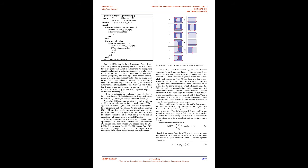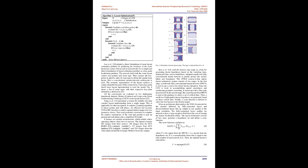Lee et al. adopted a direct formulation of room layout estimation by predicting the locations of room layout keypoints with an end-to-end network. It is a simple and direct formulation of layout estimation as a keypoint localization problem. The network infers both the room layout corners (keypoints) and room type, then connects keypoints in a specific order of room type to obtain the spatial room layout. A convolutional encoder-decoder architecture is used, and semantic segmentation of layout surfaces is attainable because of this connectivity. All experiments are evaluated on two challenging benchmark datasets: the Hedau dataset and the Large-Scale Scene Understanding Challenge (LSUN) Room Layout Dataset.